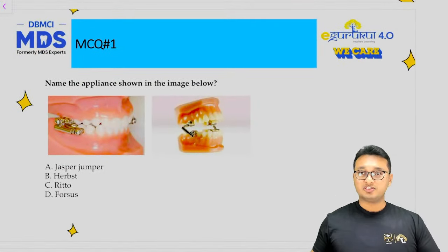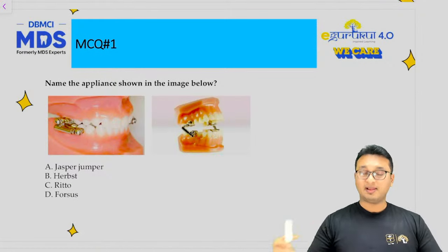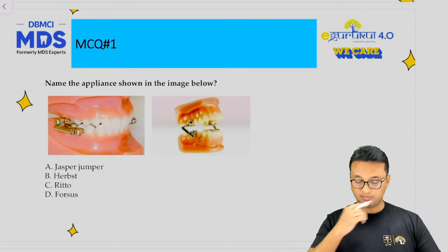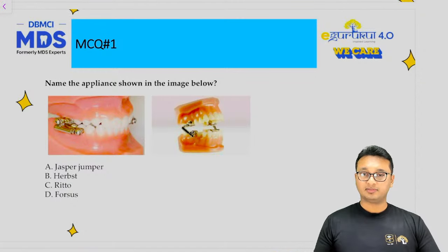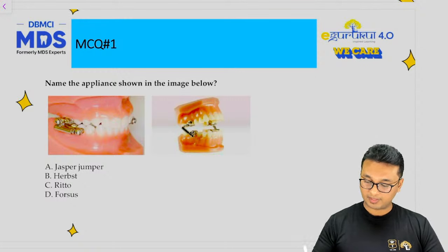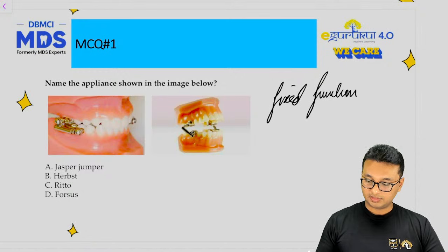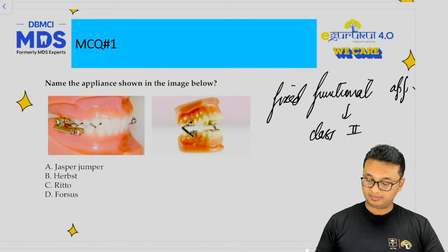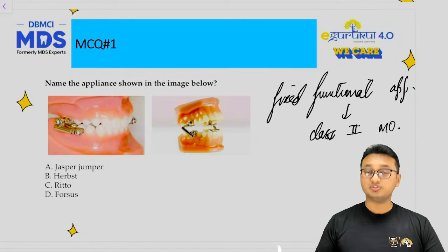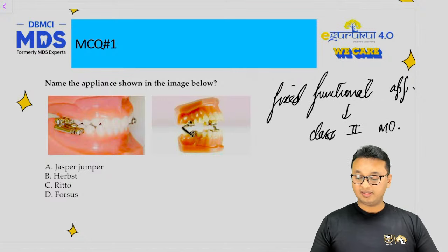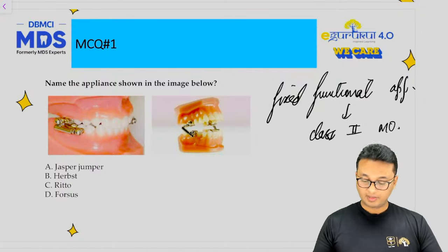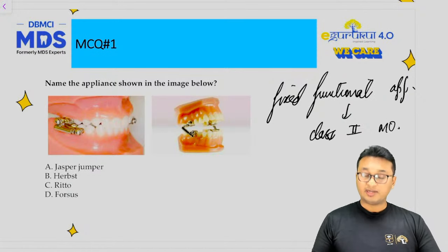The first question was an image-based question in which you have to identify the appliance given. Before identifying it, you need to understand what kind of appliance it is. It is a fixed functional appliance for correction of class 2 malocclusion — class 2 division 1 or division 2. It is basically used to correct skeletal class 2 malocclusion.